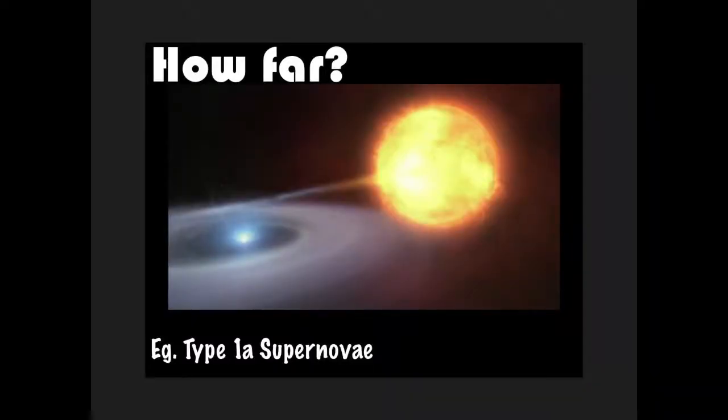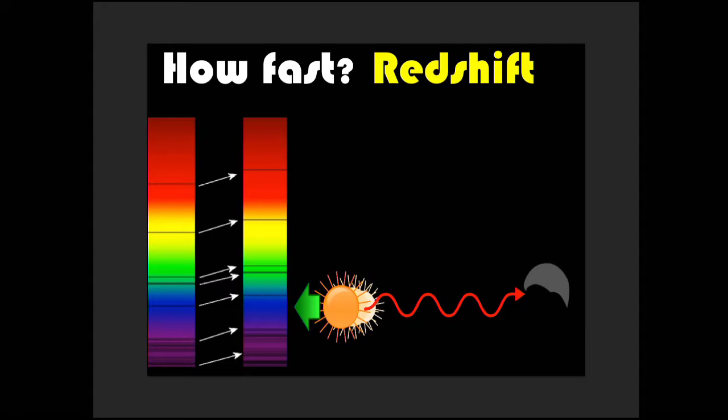One of the things we notice is that not only is space big but it's getting bigger. And to know that we have to first of all know how far away things are and for that we need things called standard candles, objects whose brightness we know. The brightest one of those is something called a type 1a supernovae. We also have to be able to measure how fast things are moving and we do that in the exact same way as the police catch you speeding. They bounce light beams off of your car and measure the change in the wavelength.